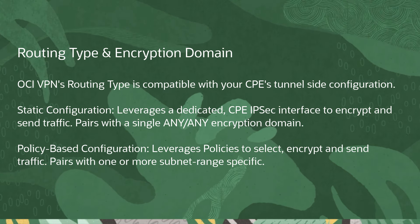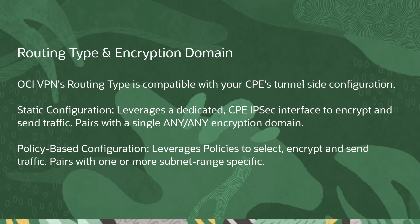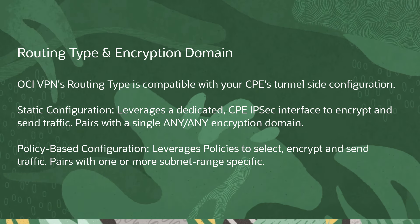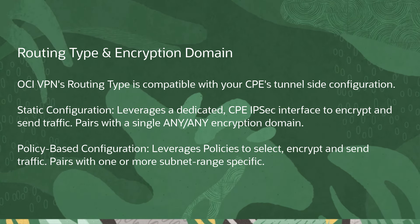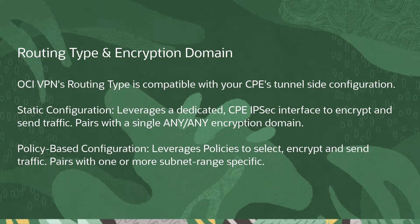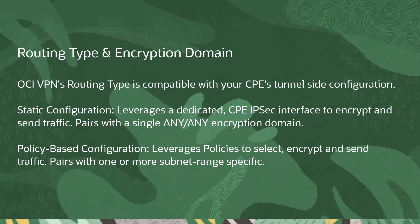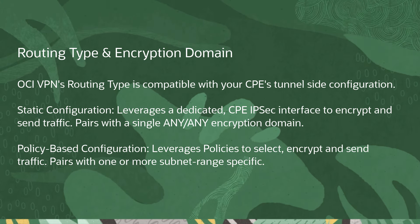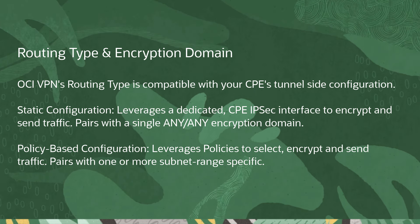First, ensure that your OCI VPN's routing type is compatible with your CPE's tunnel configuration. The Border Gateway Protocol (BGP) routing type is well understood. However, ensure you only use the static routing type if your CPE is configured with a dedicated IPsec interface which encrypts all traffic that reaches it and sends that traffic outbound over the OCI VPN.